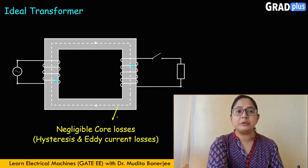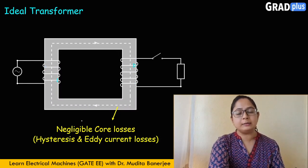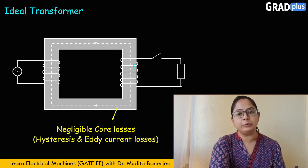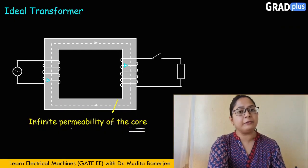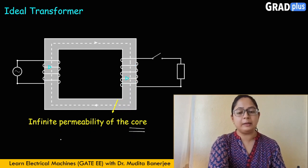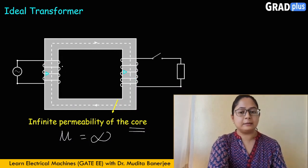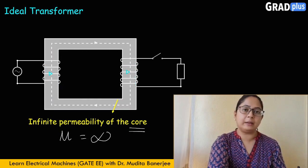The third difference is there are negligible core losses — meaning the iron loss taking place in the core is equal to 0. The iron loss equals hysteresis loss plus eddy current loss, so both of these losses are also equal to 0 in the ideal transformer. The fourth difference is the core has infinite permeability, meaning mu equals infinite. This means there is no need of magnetizing current to create flux in the core when the core has infinite permeability.